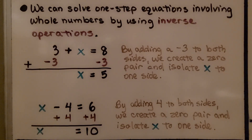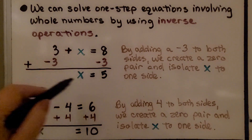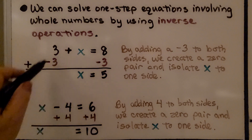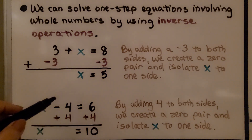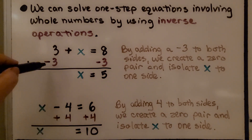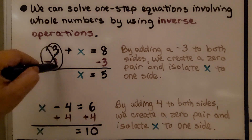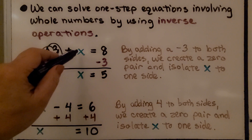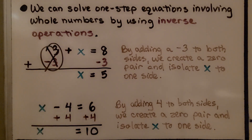We can solve one-step equations involving whole numbers by using inverse operations. Here we have three plus x is equal to eight. By adding a negative three to both sides of this equation, we can create a zero pair and isolate x to one side. We have a positive three plus a negative three — that creates a zero pair. We eliminate it, and we're left with x is equal to eight minus three, which is five. x is equal to five.